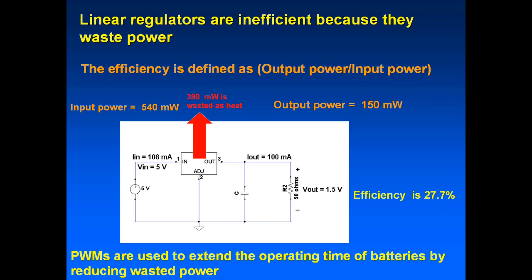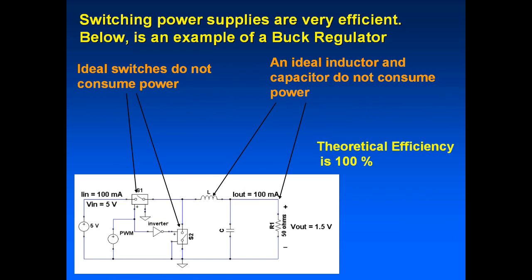If you have a device being powered off a battery, devices would not last as long — they would basically run your battery down, because most of the power is converted into heat. PWMs are used to extend the operating time of batteries by reducing wasted power.